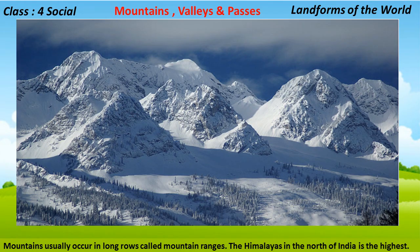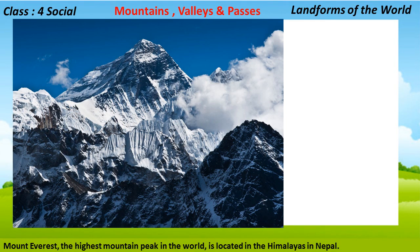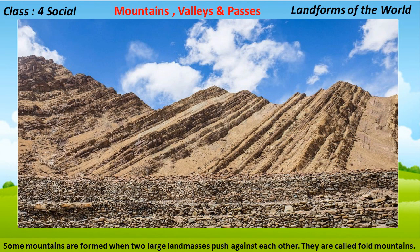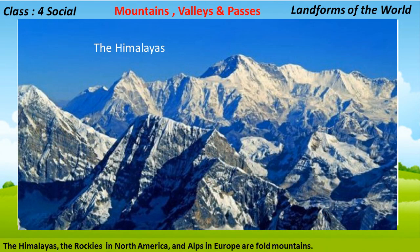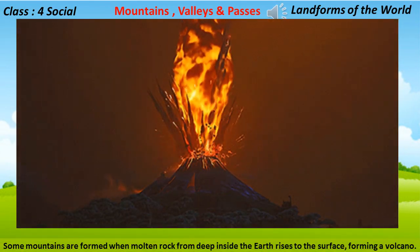Mountains usually occur in long rows called mountain ranges. The Himalayas in the north of India is the highest mountain range in the world. Mount Everest, the highest mountain peak in the world, is located in the Himalayas in Nepal. Some mountains are formed when two large land masses push against each other; they are called fold mountains. The Himalayas, the Rockies in North America, and the Alps in Europe are fold mountains.